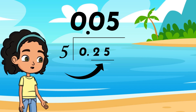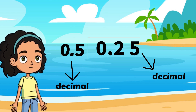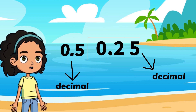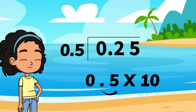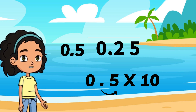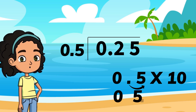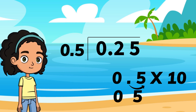Let's move on to dividing a decimal by another decimal. To divide a decimal by a decimal, you need to make your divisor a whole number. Let's divide five tenths by twenty-five hundredths. To make five tenths into a whole number, you need to move one place over by multiplying by ten. Your new divisor is five.